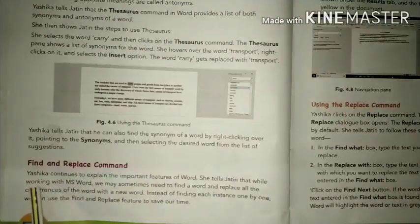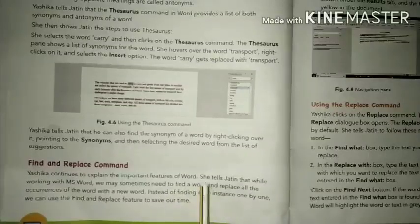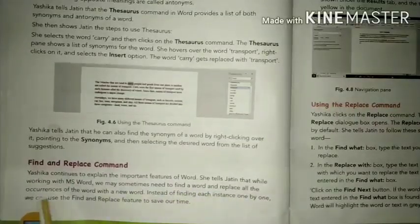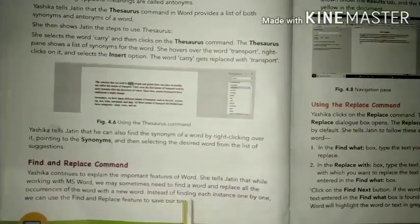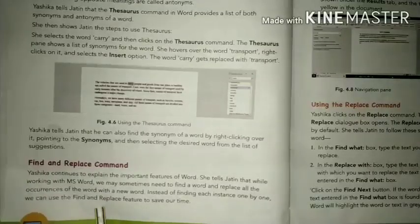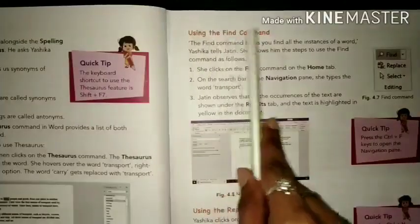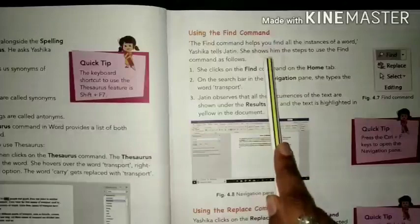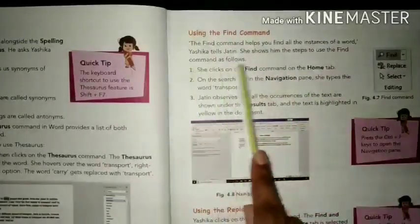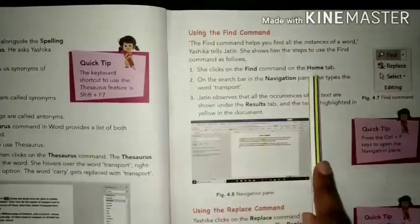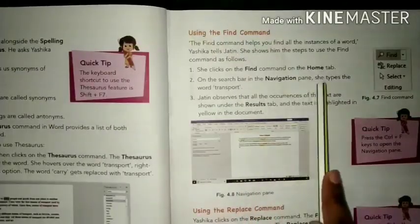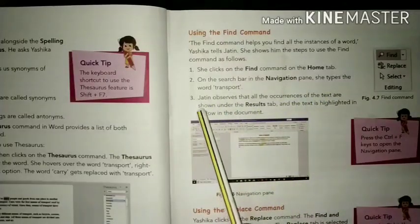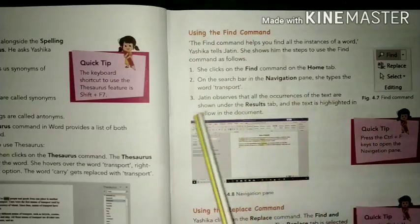Find and Replace Command: Yashika continues to explain important features of Word. She tells Jatin that while working with MS Word, we may sometimes need to find a word and replace all occurrences with a new word. Instead of finding each instance one by one, we can use the Find and Replace feature to save time. The Find command helps you find all instances of a word. She clicks the Find command on the Home tab and in the search bar in the navigation pane types the word 'transport'.